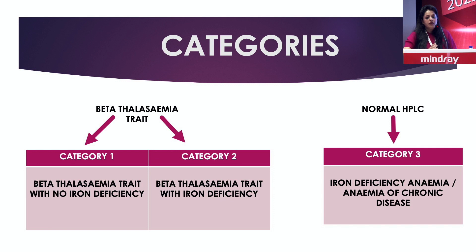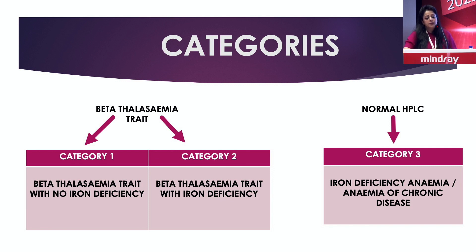We divided the entire study into parts. One part was when HPLC was completely normal with no thalassemia trait, and the other was when there was thalassemia trait. The thalassemia trait group was further divided: first, thalassemia trait with normal serum iron studies indicating no iron deficiency; second, thalassemia trait with iron deficiency. The third category was normal HPLC but with low MCV, including iron deficient anemics and anemia of chronic disease combined.